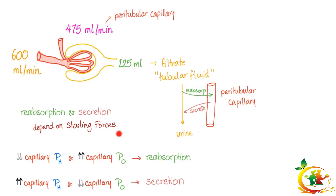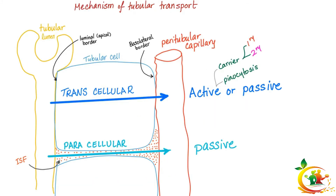Reabsorption and secretion depend on Starling forces. For fluid to be reabsorbed, there are two pathways: transcellular — through the cell — or paracellular — between cells. Transcellular can be active or passive, but paracellular is always passive and doesn't require ATP. Active transport includes primary active transport, secondary active transport, or pinocytosis for some proteins.